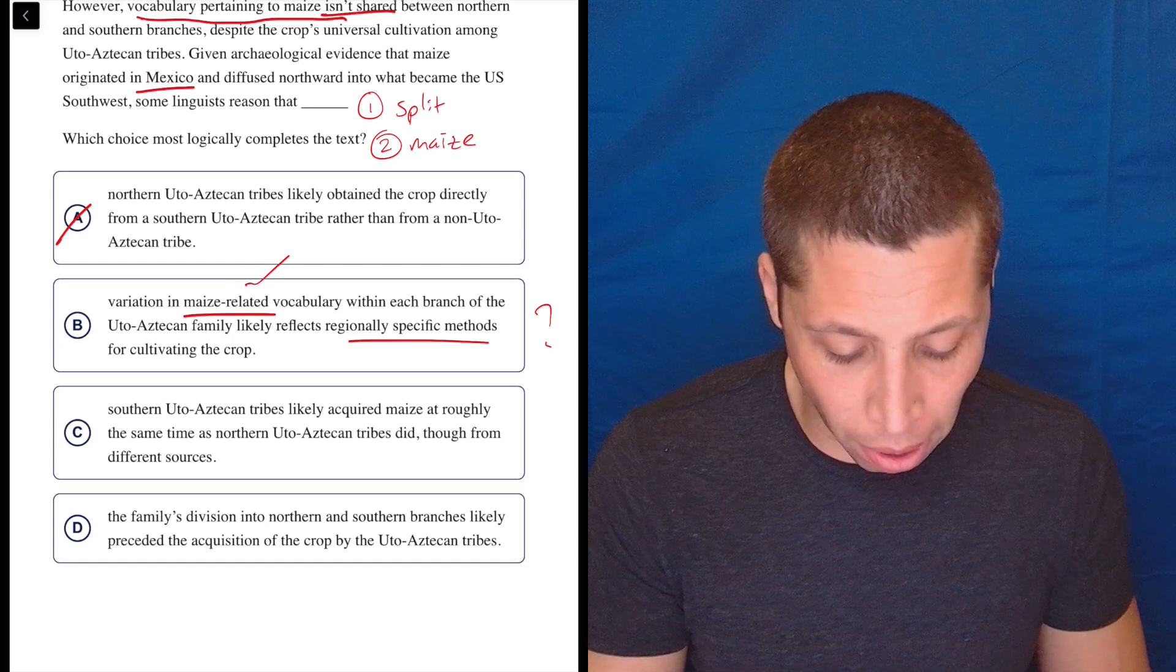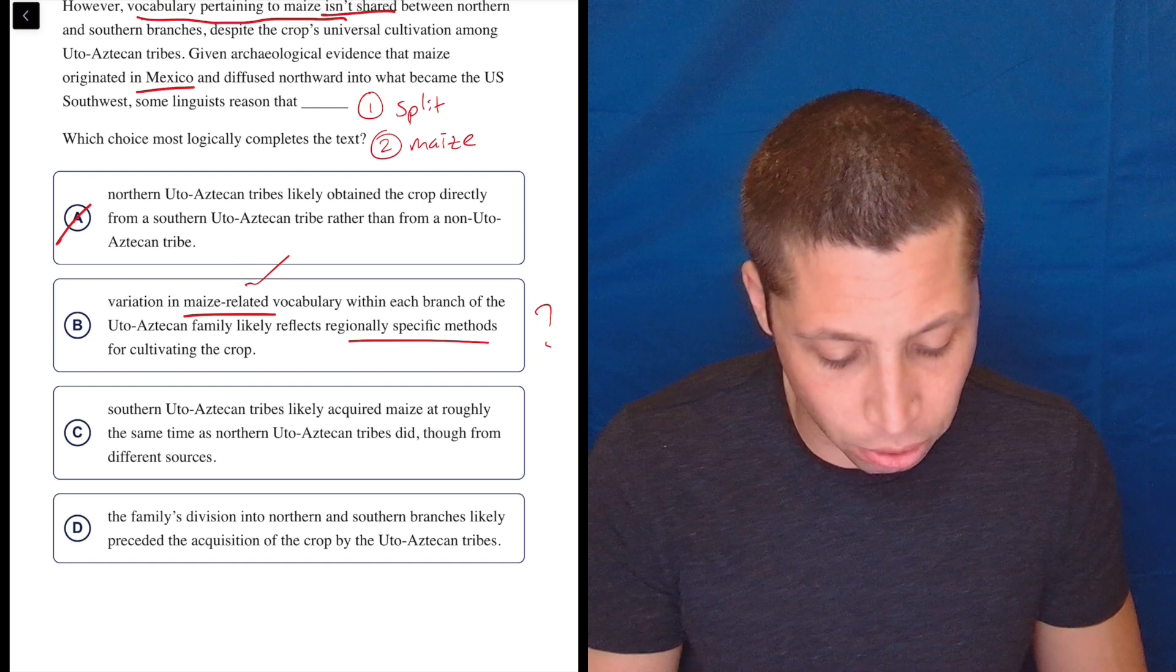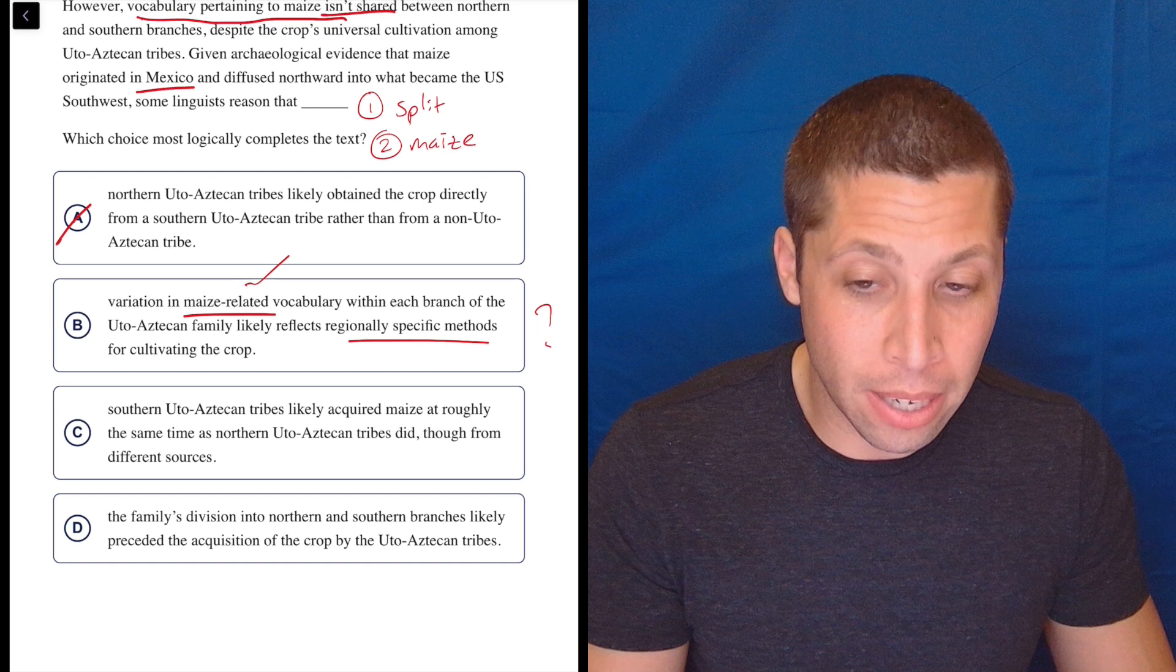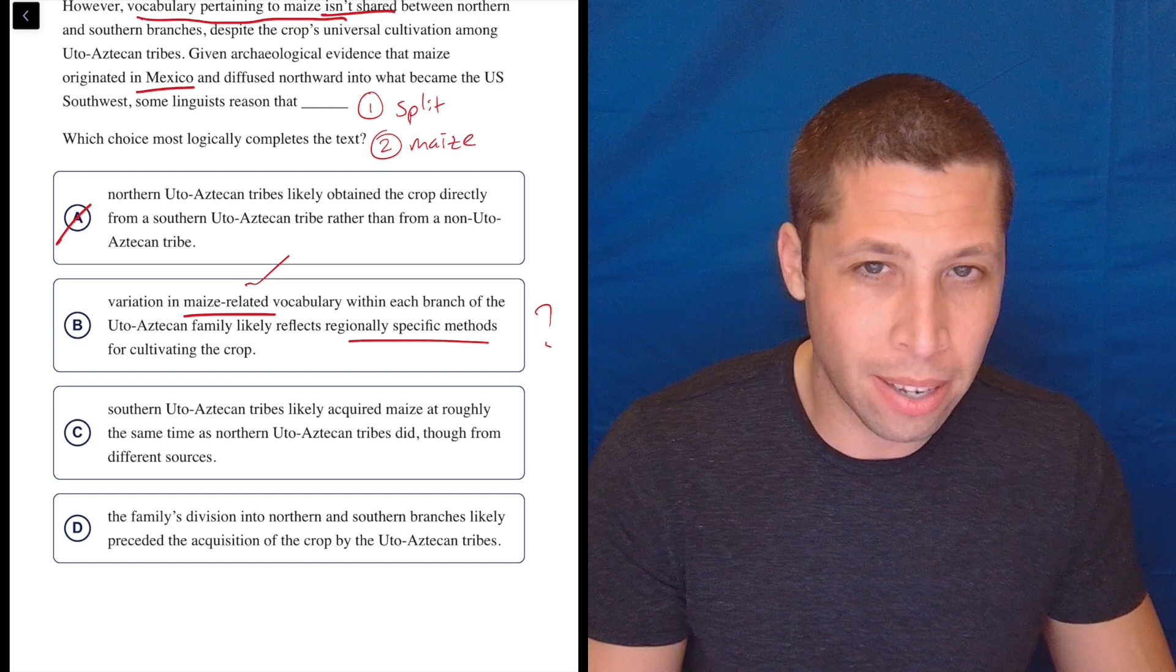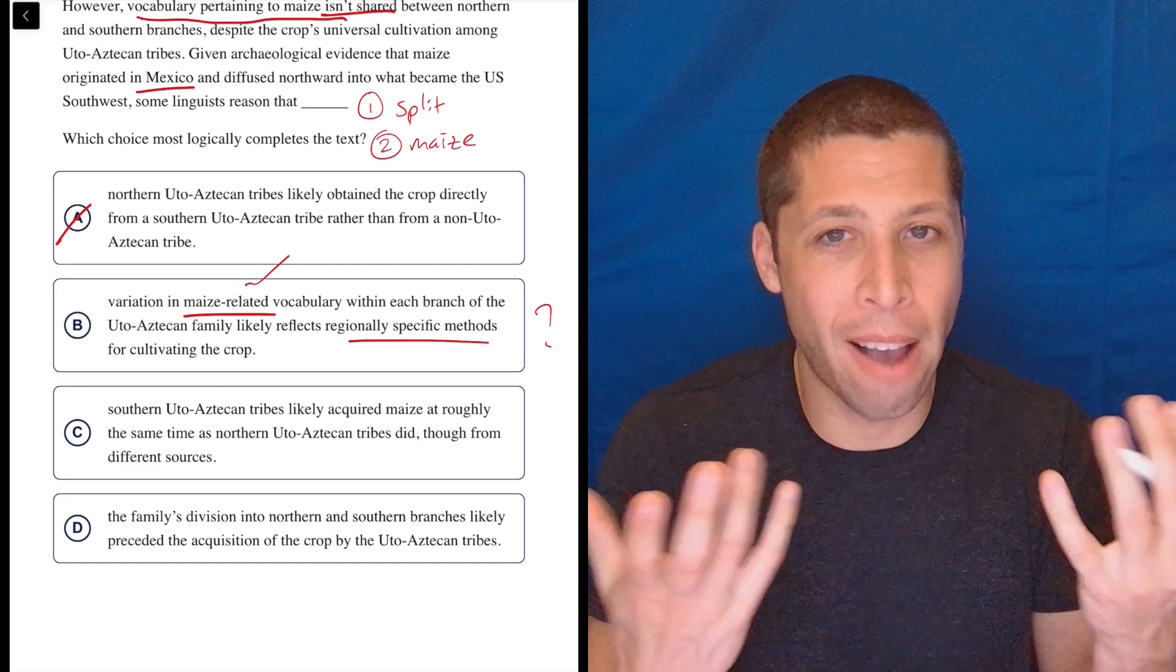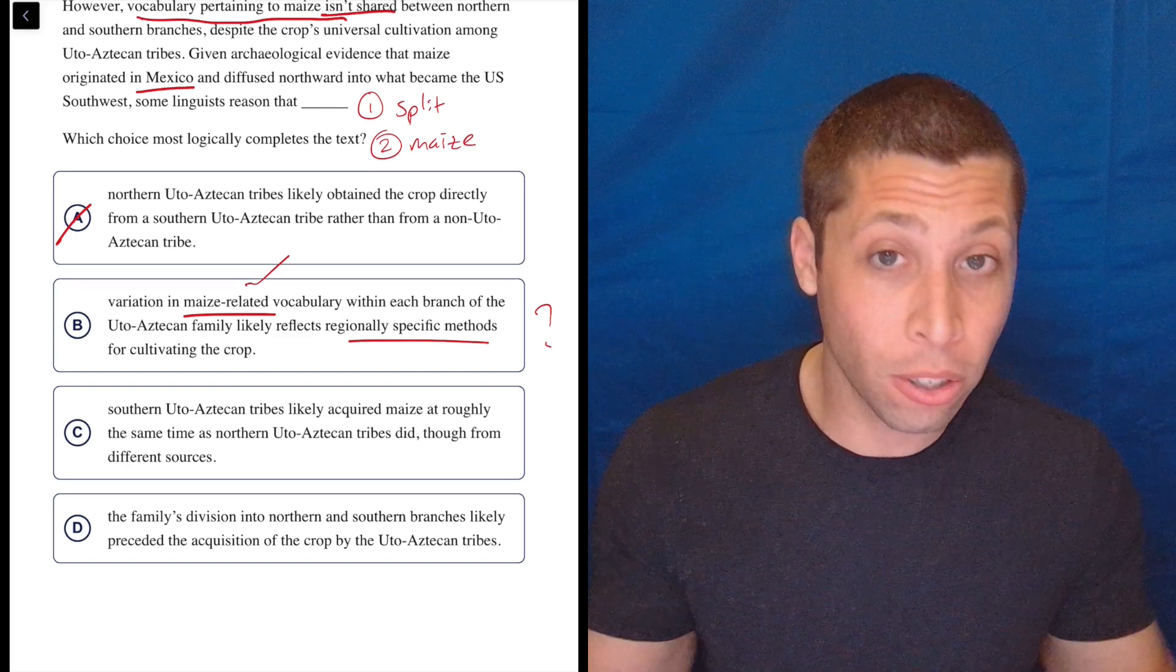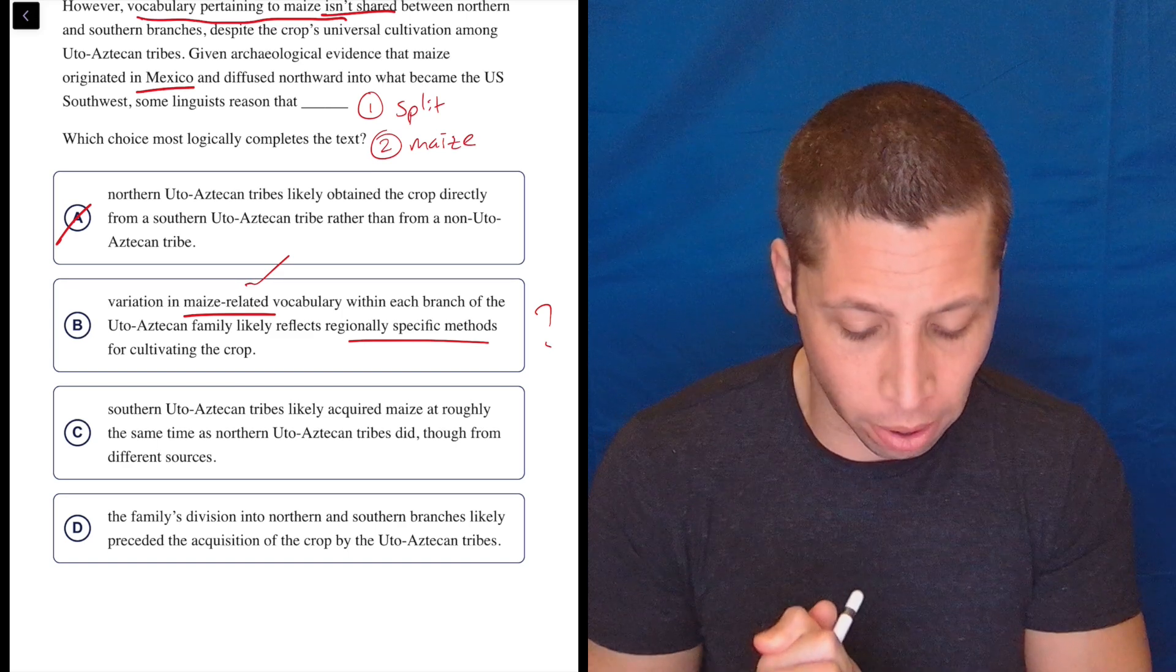Southern Udo-Aztecan tribes likely acquired maize at roughly the same time as northern Udo-Aztecan tribes did, though from different sources. Okay, but again, if they acquired it at the same time, why does that explain why they have a different word for it? It seems like maybe, again, that they should have the same word. Maybe if they said specifically that the different sources also gave them different words, I'd be okay with that, but it's not quite going that far.